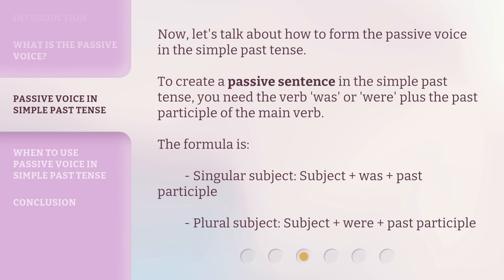Now, let's talk about how to form the Passive Voice in the Simple Past Tense. To create a passive sentence in the Simple Past Tense, you need the verb 'was' or 'were' plus the past participle of the main verb. The formula is: singular subject — subject plus 'was' plus past participle; plural subject — subject plus 'were' plus past participle.